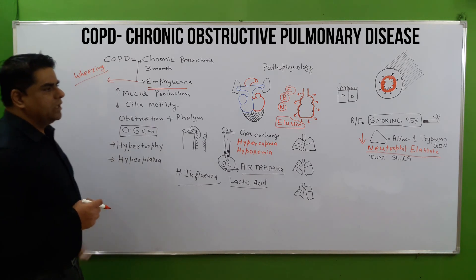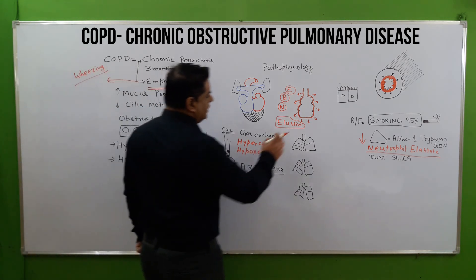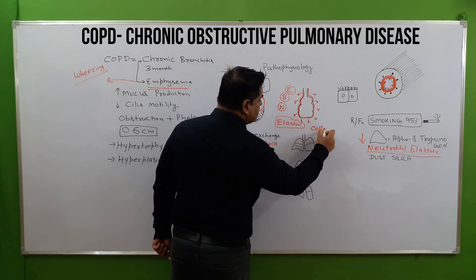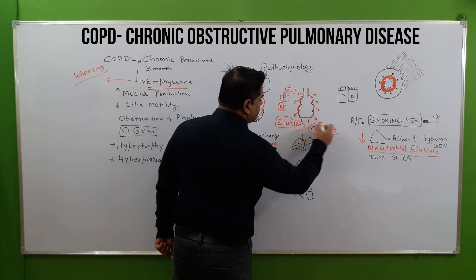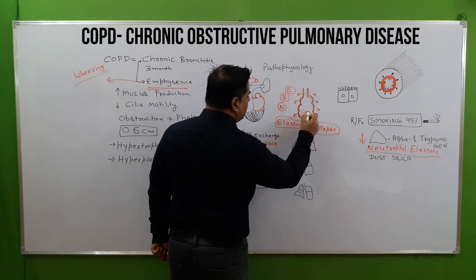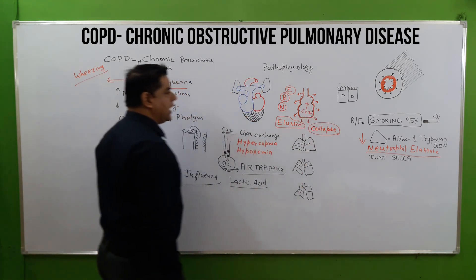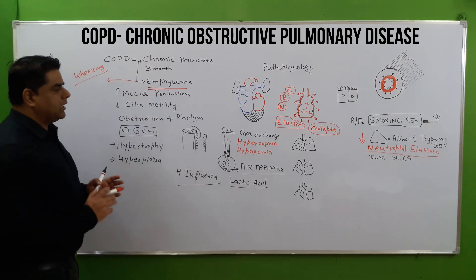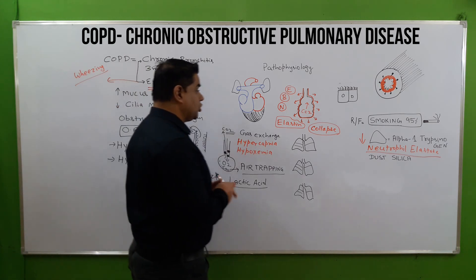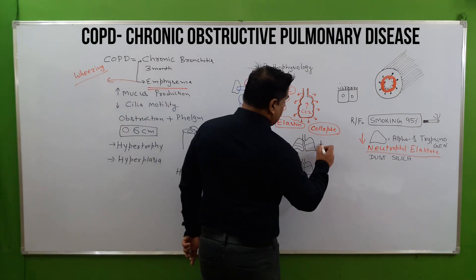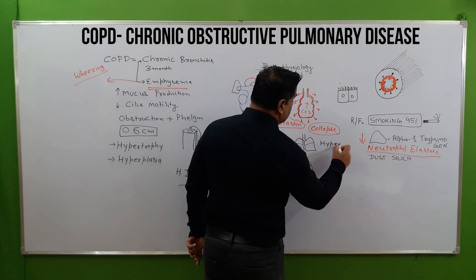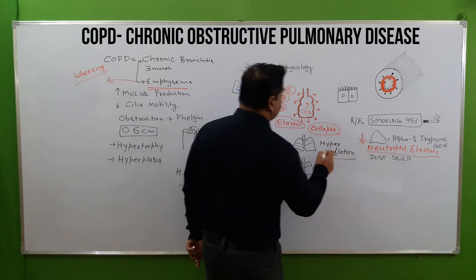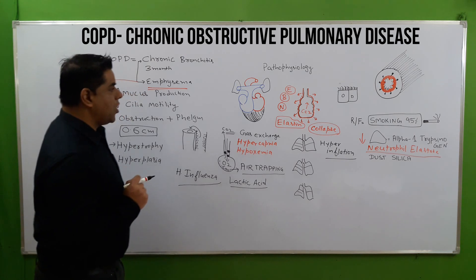This can also cause air trapping along with collapse of the alveoli, which is a very serious problem. CO2 will not be able to go out due to collapsing of the alveoli. Alveoli show permanent expansion and cause hyperinflation, forming pocket-like structures.